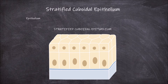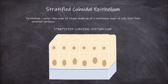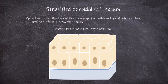The epithelium is the outer thin layer of tissue made up of a continuous layer of cells that lines the external surfaces of the body, organs and blood vessels, in addition to the internal surfaces of the hollow organs within the body. There are several types of epithelium found lining the surfaces of the body.